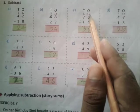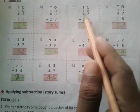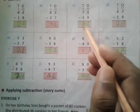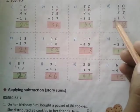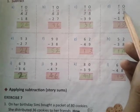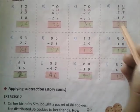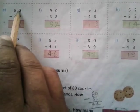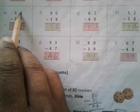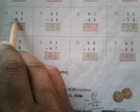C: 75 subtract 39. 15 subtract 9 is 6, 6 subtract 3 is 3, equals 36. D: 47 subtract 18. 17 subtract 8 is 9, 3 subtract 1 is 2, equals 29. E: